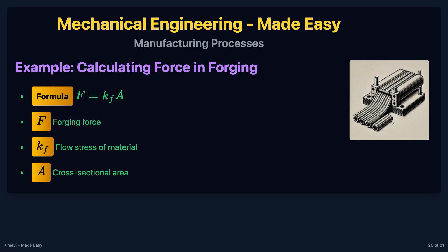The forging force can be estimated using the formula: F equals K sub F times the cross-sectional area of the workpiece.